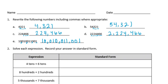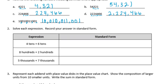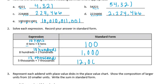Number 2: solve each expression and record your answer in standard form. Four tens plus six tens — four plus six is ten tens, and ten tens equals one hundred. Eight hundreds plus two hundreds is ten hundreds, and ten groups of one hundred is one thousand. Five thousands plus seven thousands is twelve thousands, or twelve thousand.